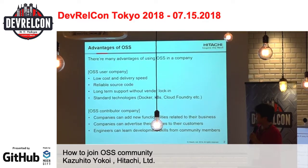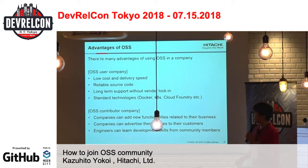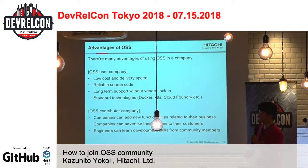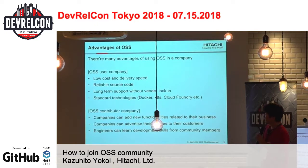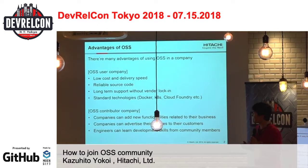Third is long term support without vendor lock-in. Vendor lock-in has sometimes a good point for both engineers and vendors. But if the vendor stops their product, engineers need to consider about how to migrate their software to others, so it is sometimes a problem. But if the system uses open source software, engineers don't need to face the problem.